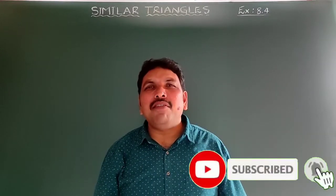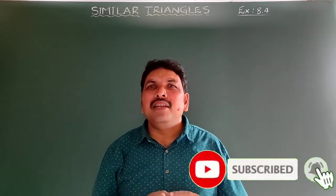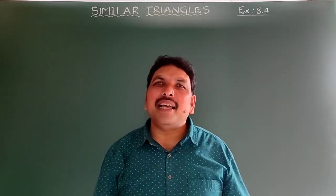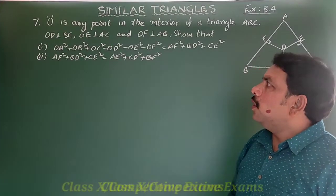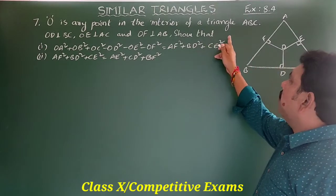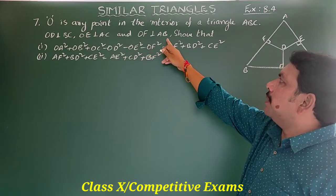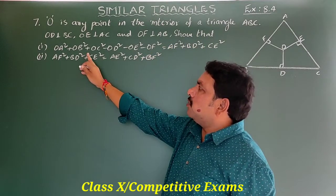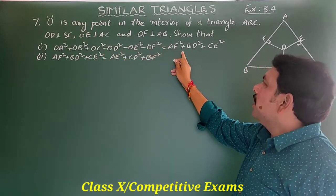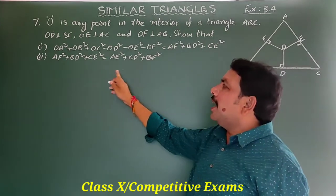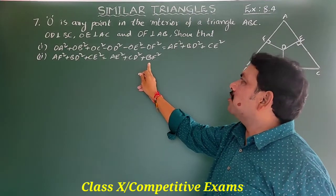Hi friends, welcome to KVR Mass Academy. Today in this video let us discuss problems seven, eight, and nine in exercise 8.4 on similar triangles. This is the seventh sum: O is any point in the interior of triangle ABC. OD is perpendicular to BC, OE is perpendicular to AC, and OF is perpendicular to AB. Show that OA² + OB² + OC² − OD² − OE² − OF² = AF² + BD² + CE², and AF² + BD² + CE² = AE² + CD² + BF².